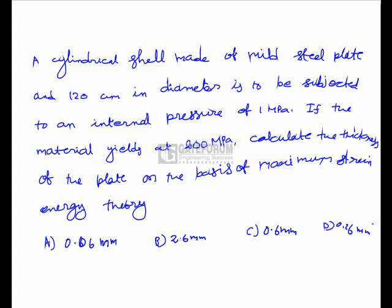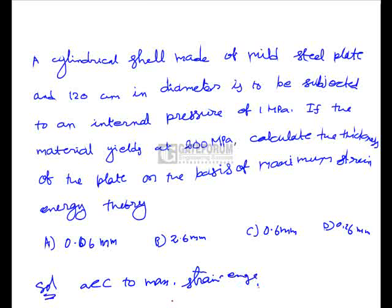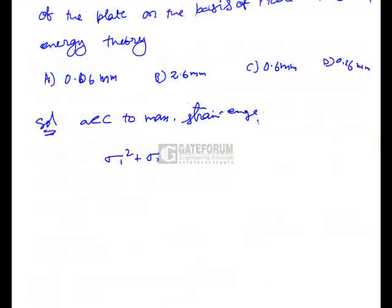A cylindrical shell is made of mild steel plate, 120 cm in diameter, to be subjected to an internal pressure of 1 MPa. If the material yields at 200 MPa, calculate the thickness of the plate on the basis of maximum strain energy theory. According to maximum strain energy theory, the equation is given by σ₁² + σ₂² - σ₁σ₂ = σ_y² in 2D stress condition.